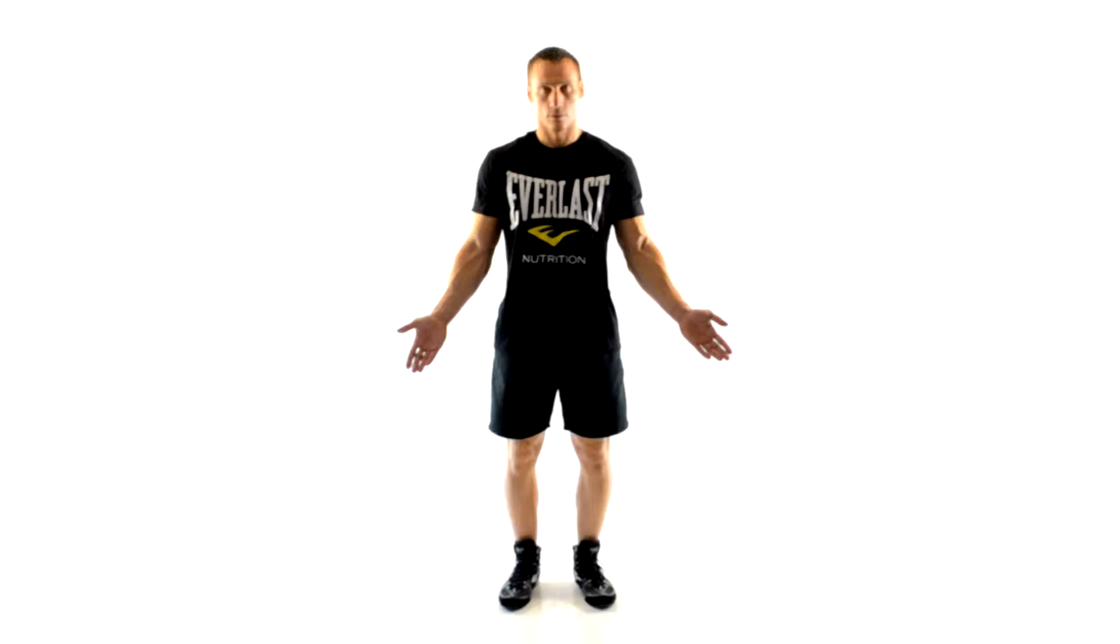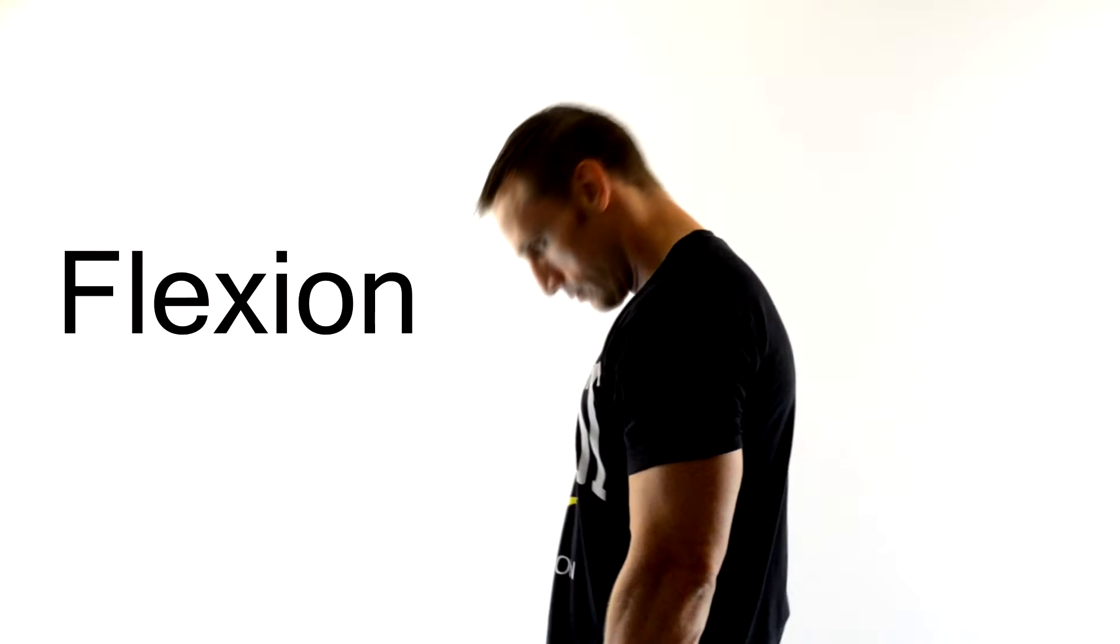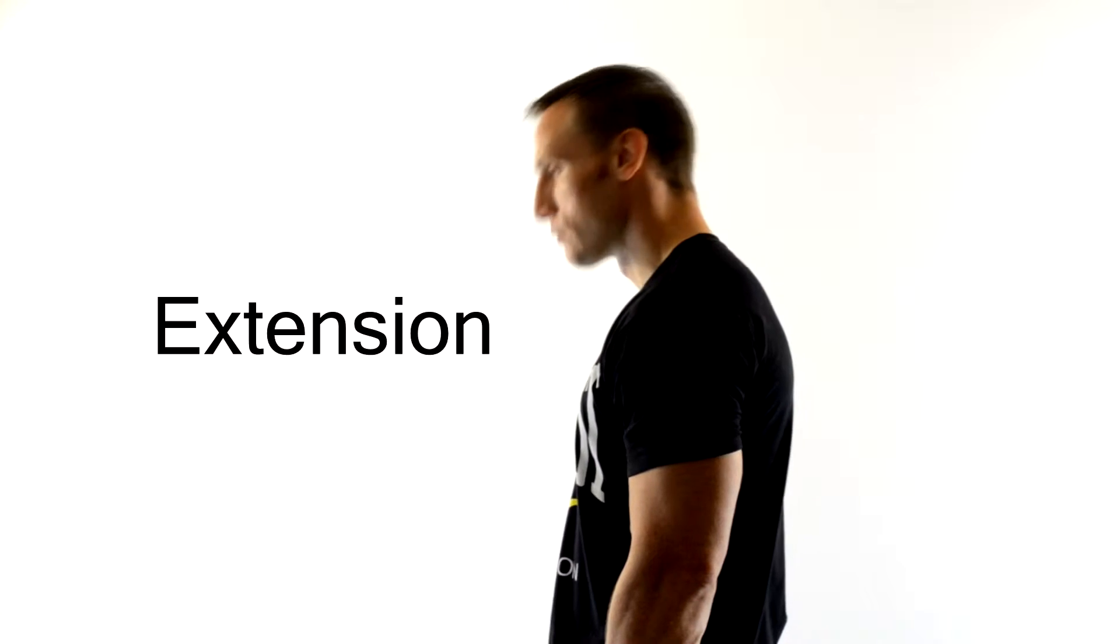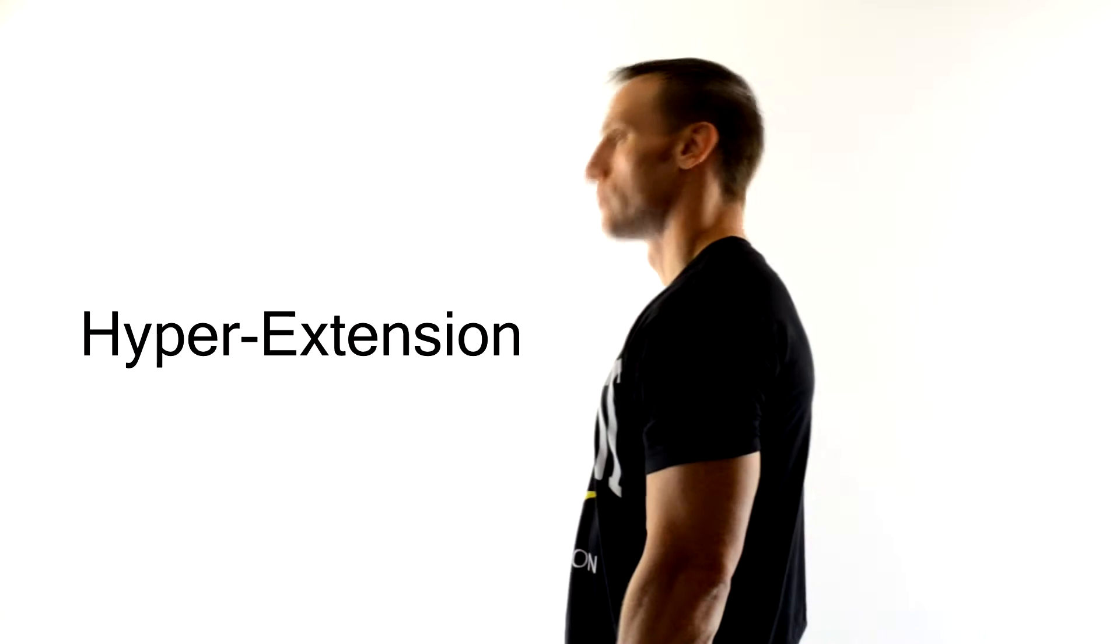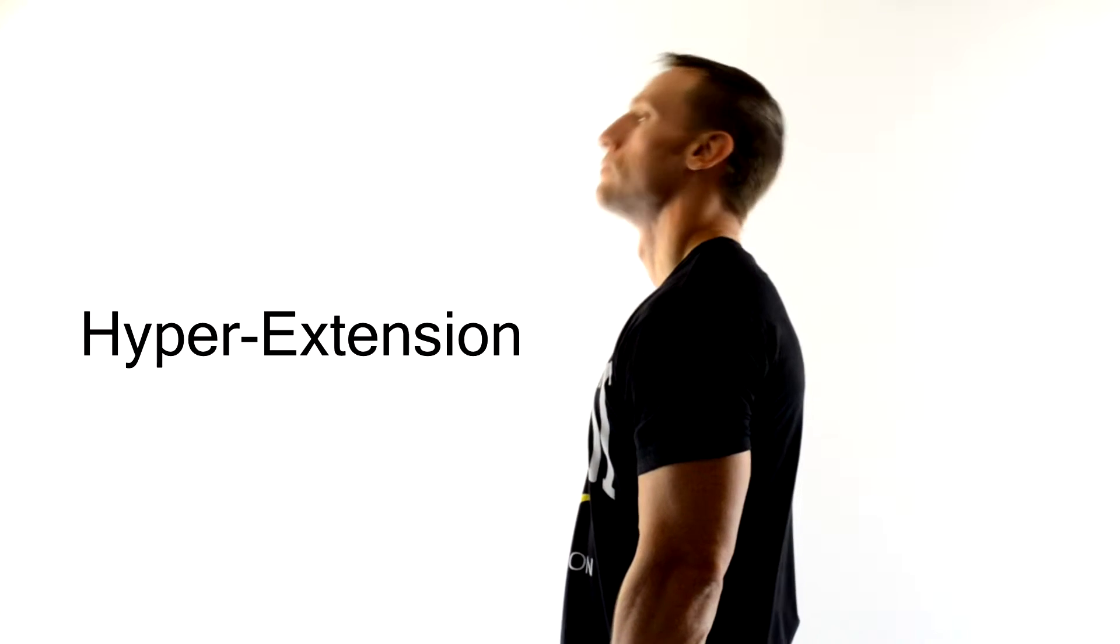Just a quick note that these movements should be done from the anatomical position. So let's start off with the ones that you're probably most familiar with, flexion and extension. These movements occur across the sagittal plane. Flexion is decreasing the angle of the joint, while extension is increasing the angle of the joint. And hyperextension is extending the joint beyond its regular range of motion.